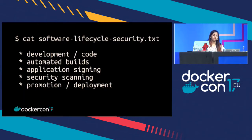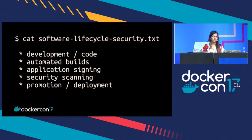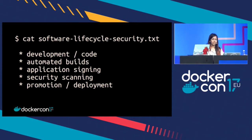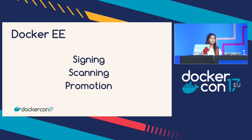In order to support this lifecycle from a security perspective, there are a ton of things that you actually need. These exact same concepts can be mapped to an application. For example, you need to know who wrote the code — those are your developers. You need to know that QA and testing approved it. You need to know that the application is signed and you can trust it. You need to scan it for any vulnerabilities. And finally, you need to make sure the deployment process works. Today we're going to focus on the three features that Docker EE provides: signing, scanning, and promotions.